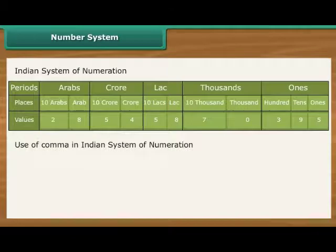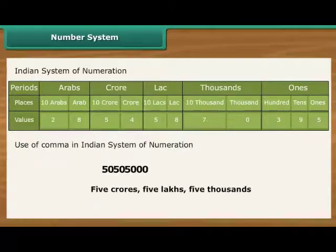Commas used to mark thousands, lakhs and crores. The first comma comes after hundreds place, three digits from the right, and marks thousands.